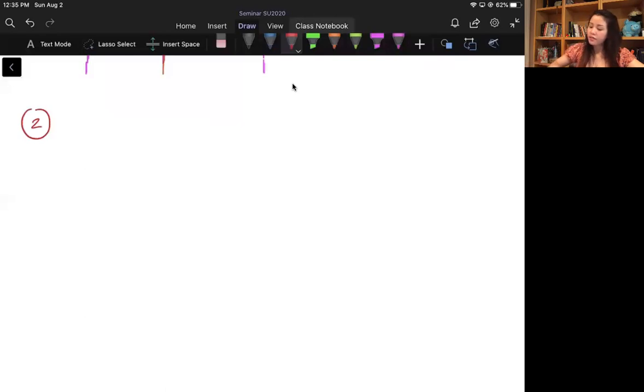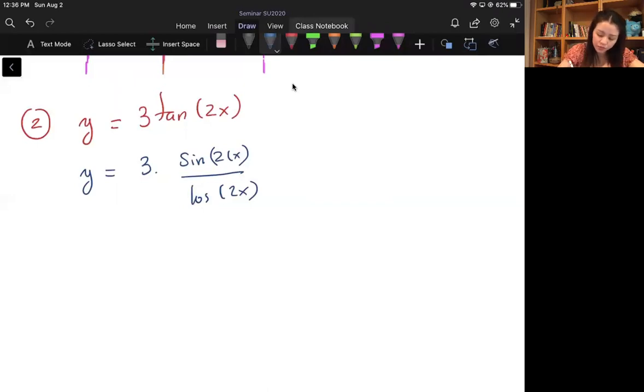In the following example, I have y equals 3 times tangent of 2x. So again, first thing first, I'm going to write this in terms of sine and cosine. So this is equal to 3 sine of 2x over cosine of 2x. Again, this function has vertical asymptotes whenever it's undefined, and it is undefined when cosine of 2x equals zero.